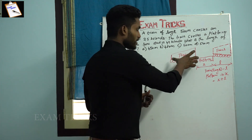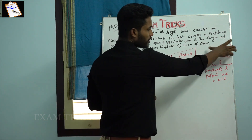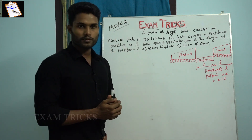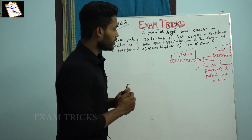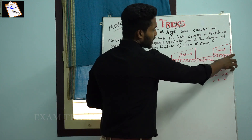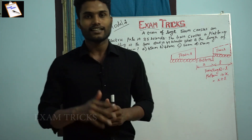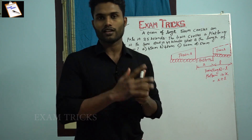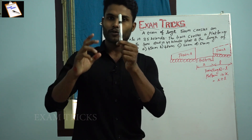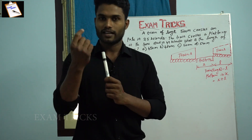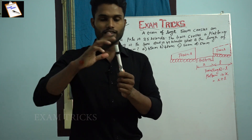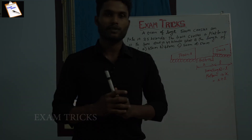So when train A fully crosses a platform, a bridge, or any object, to find the distance covered you add the length of the train plus the length of the object. For small objects like an electric pole, a man, or a cycle, their length is taken as zero and neglected.